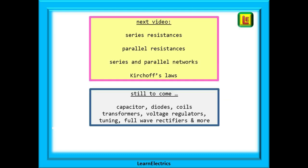In the next video we will look in detail at series and parallel resistances with lots of worked examples. If you want to understand electronics then it is so important to master series and parallel networks and Kirchhoff's laws. We will move on to capacitors, diodes, coils, transformers, voltage regulators, tuning circuits, full wave rectifiers and so much more.